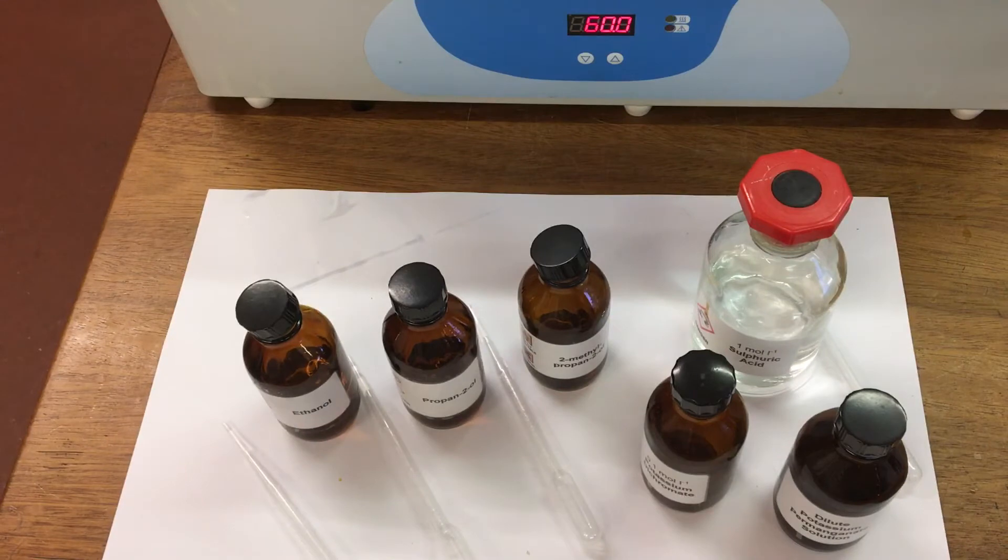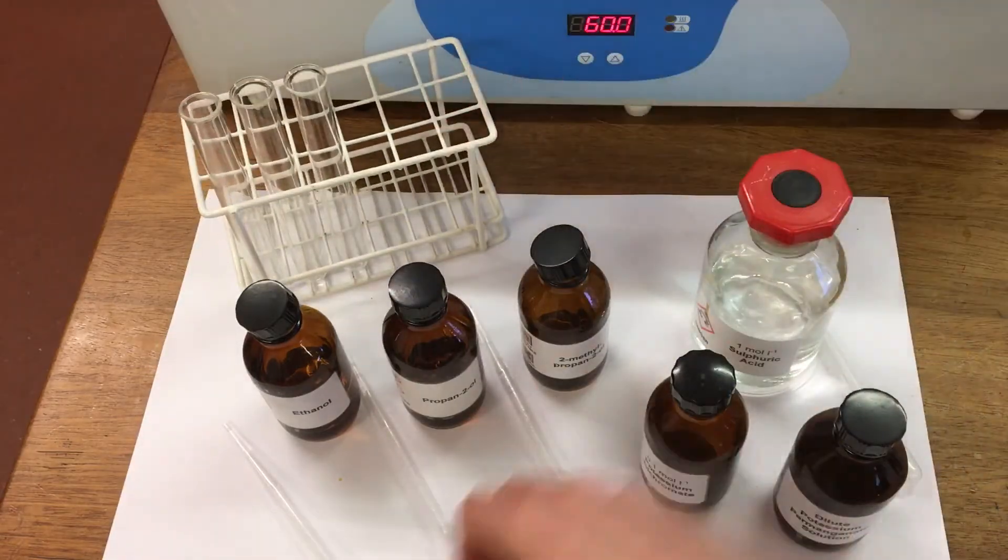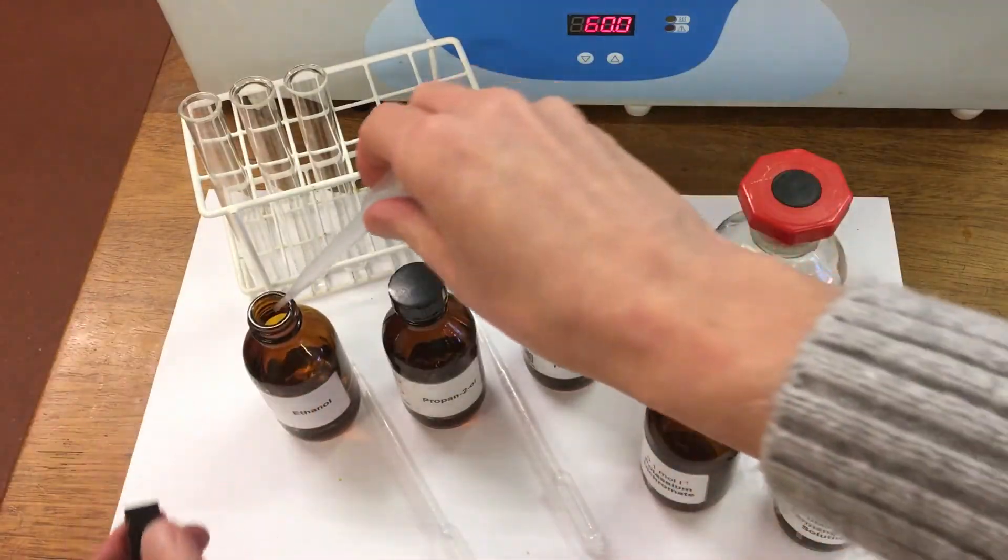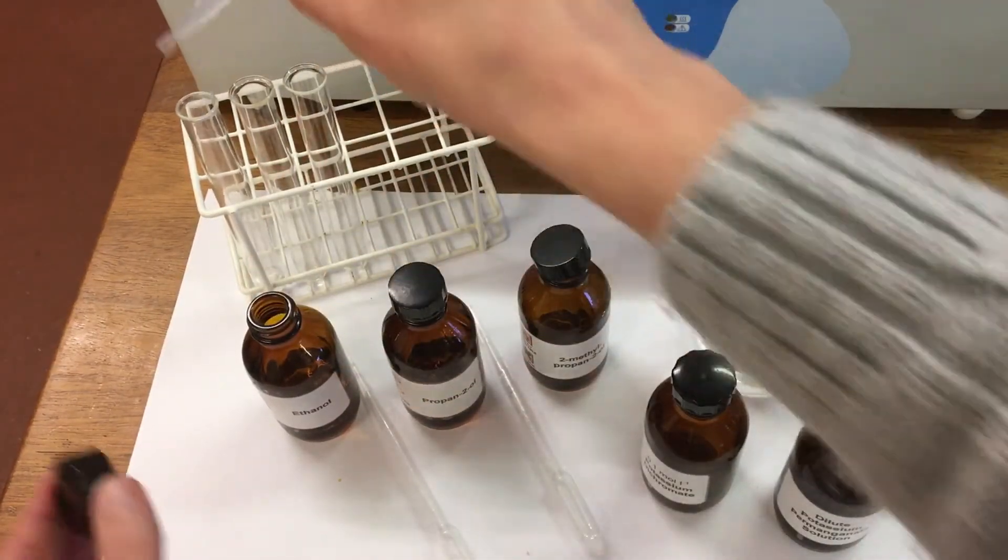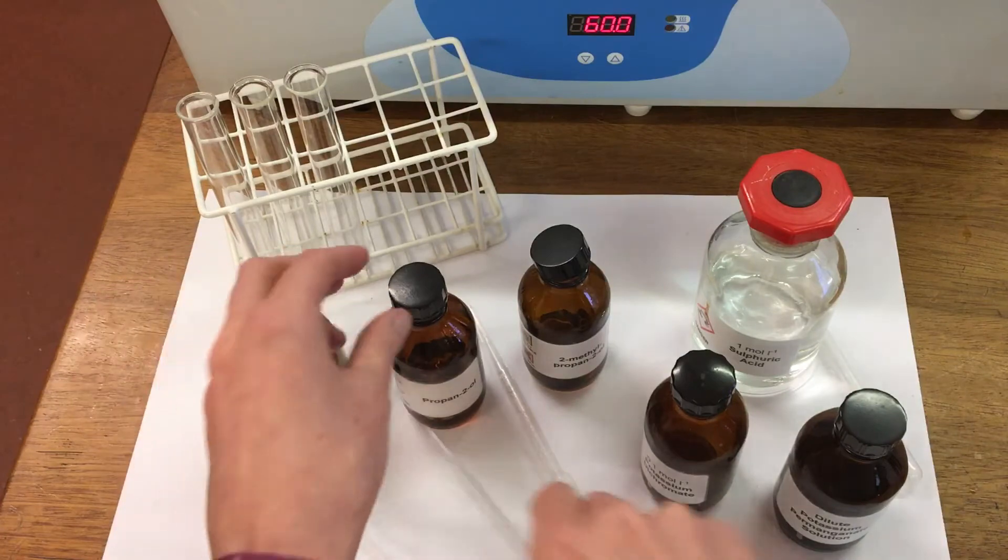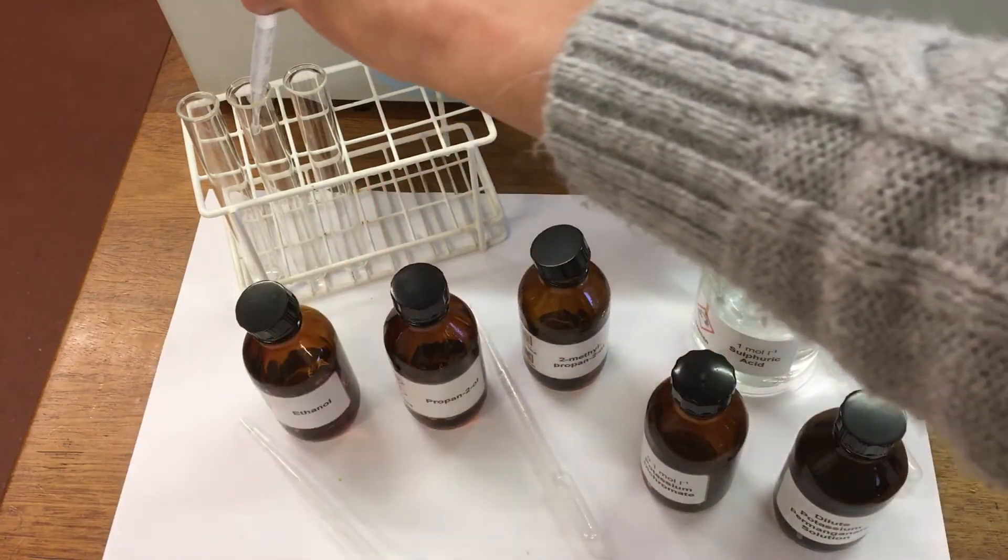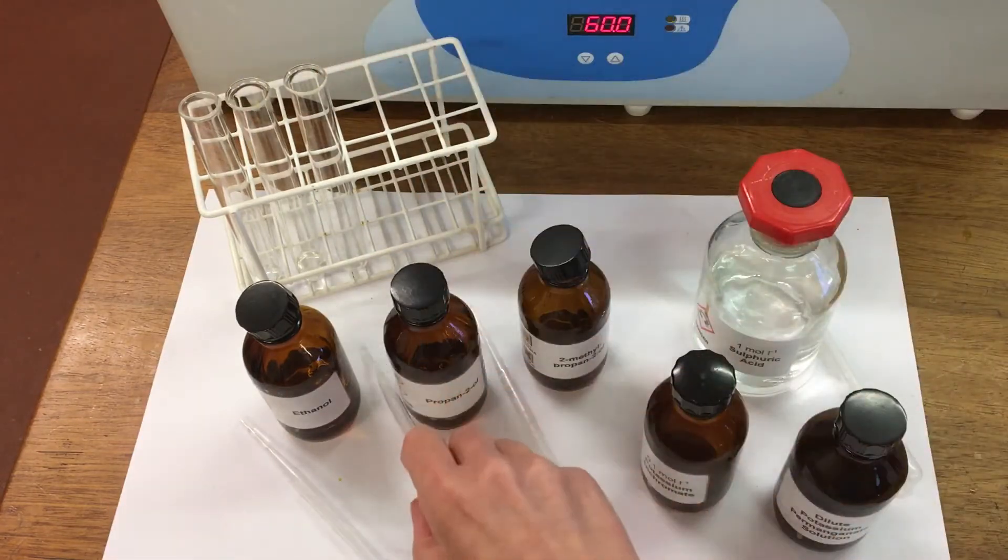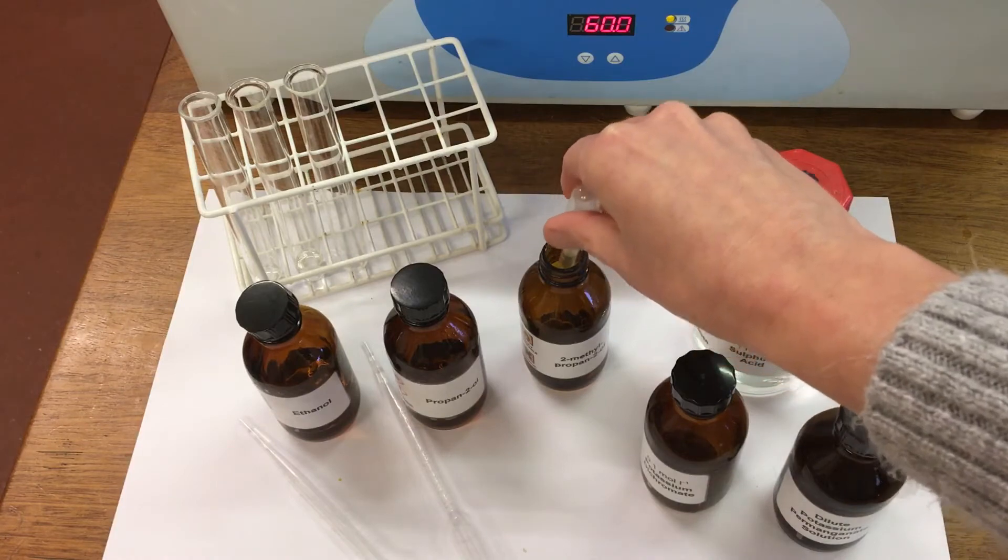And then I'm going to repeat the experiment with our second oxidizing agent. So we're going to do exactly the same. Again, we're going to pop some ethanol into our test tube, propan-2-ol, and then the 2-methylpropan-2-ol.